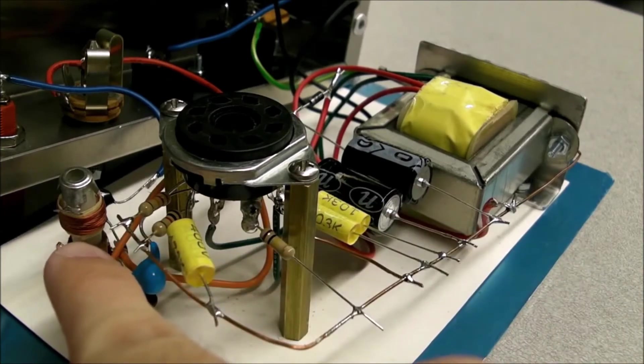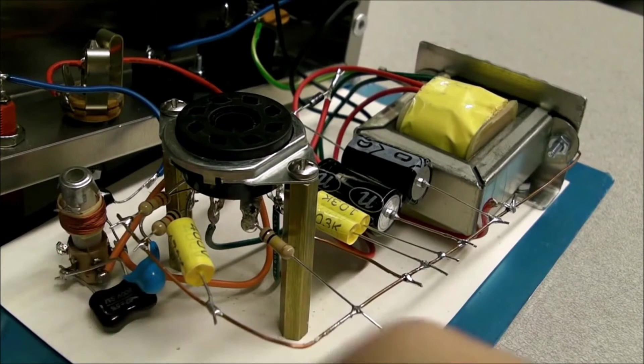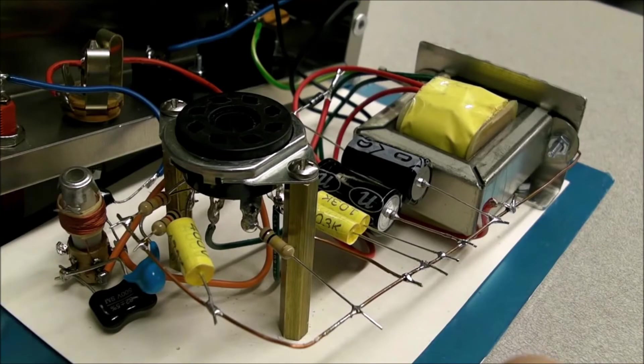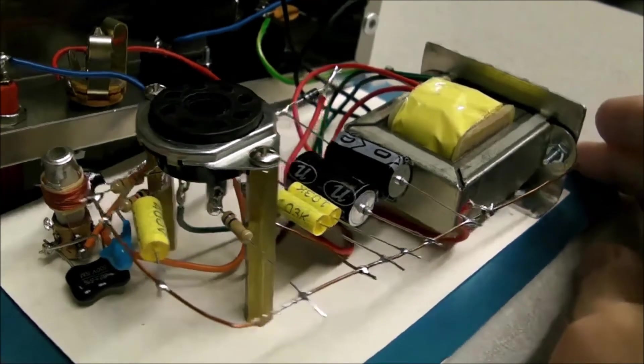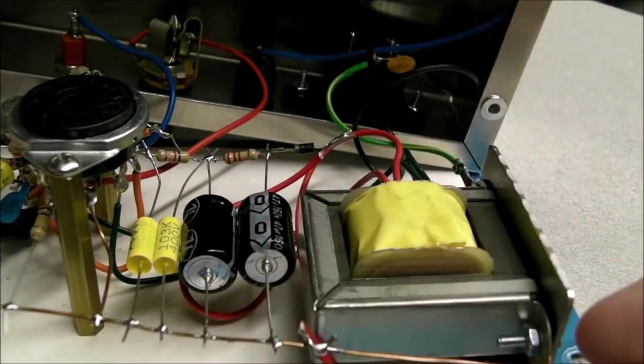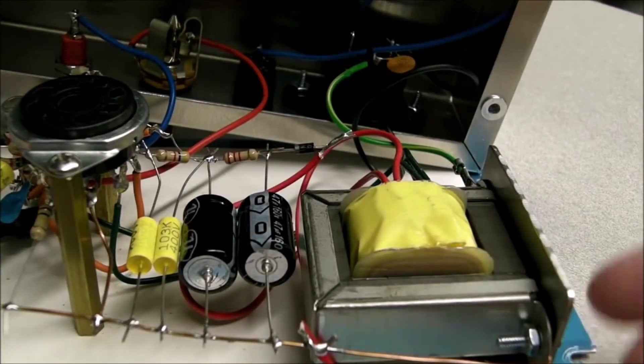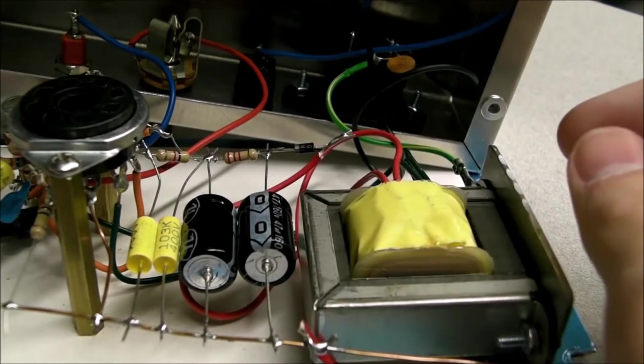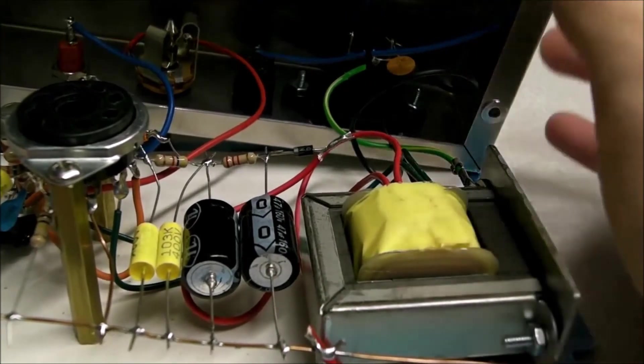So just some of the components here. Here's the actual tuning coil to set the carrier frequency of the transmitter, various capacitors and resistors that are part of the circuit, power supply filtering, diode rectification, just all the general parts you'd expect to see.